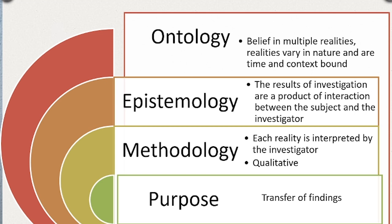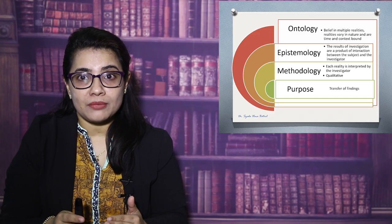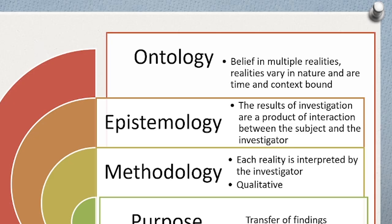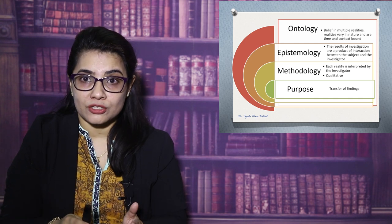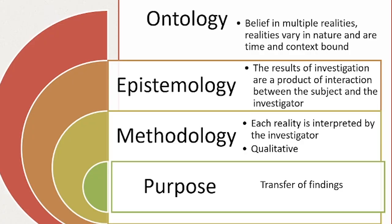The ontology in interpretivism holds that there are multiple realities — there is no single reality, and to understand reality you need to consider multiple perspectives. They also believe in time- and context-bound reality, meaning if the context changes, the reality changes too. Their epistemological belief is that there is a relationship between reality and the researcher — the researcher influences the research. Their methodology is qualitative, where each reality is interpreted by the investigator, and the researcher plays a strong role.